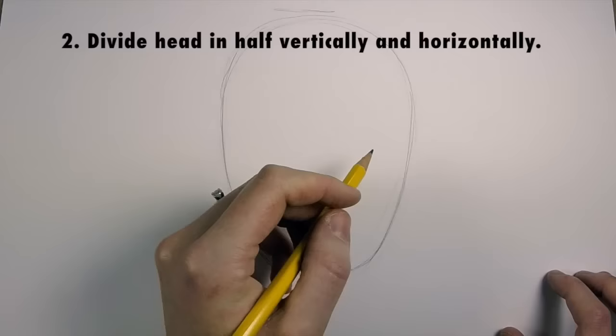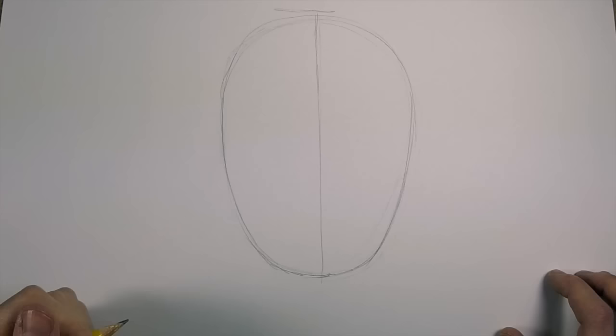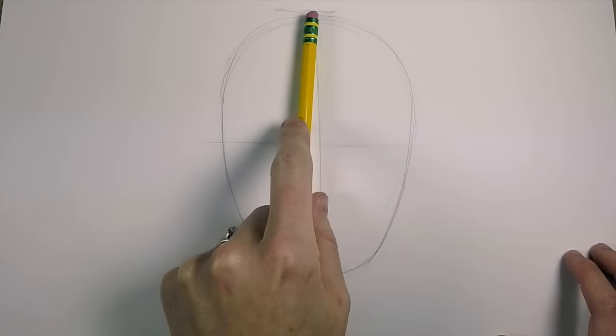Next, I want you to divide the head in half horizontally and vertically. Remember, draw it light until you get it right. We're going to be erasing almost all of these lines, so it's very important that we draw them lightly so we don't have big lines dividing up our face on the final portrait.